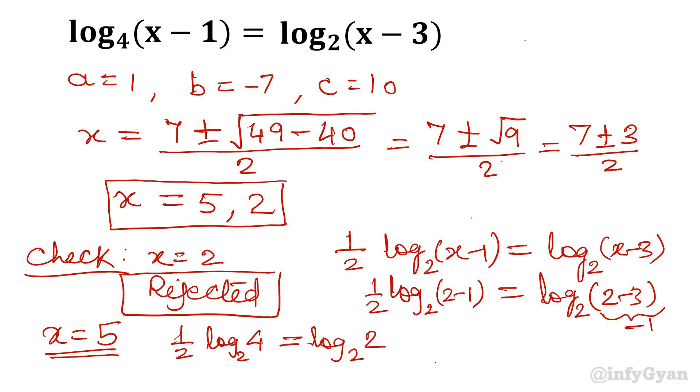We can write 4 as 2². So half log base 2 of (2²) equals log base 2 of 2, which simplifies to 1 = 1. This is true, so the final solution is x = 5.